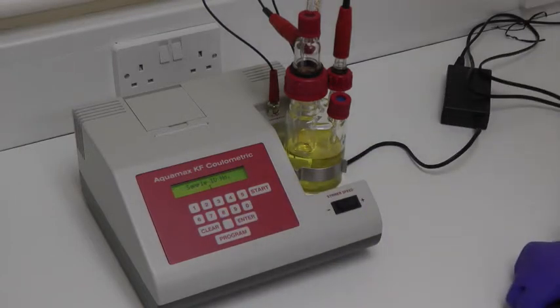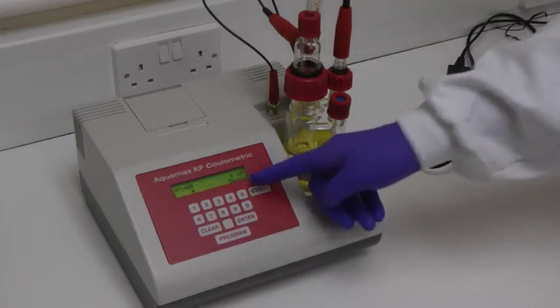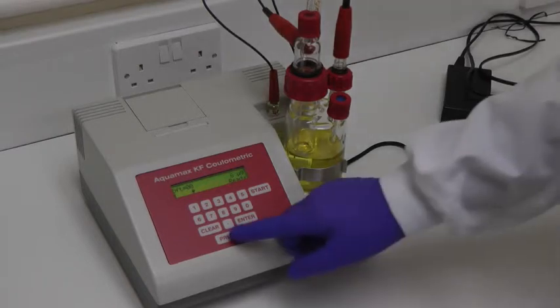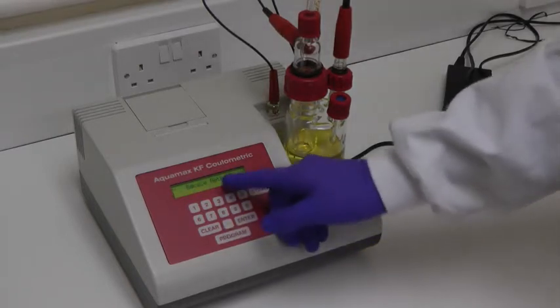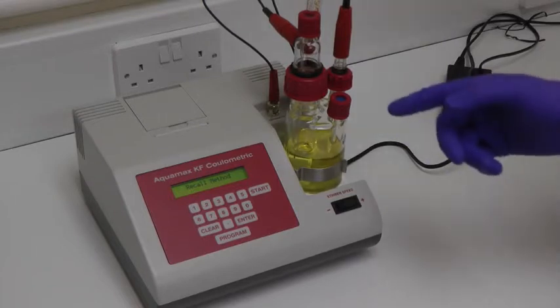If the sample ID number is the only parameter to be changed, press Clear, and the unit will return to the ready mode. It is not necessary to scroll through unwanted parameters. The second parameter is Recall Method. Methods can be stored in memory to avoid reprogramming from scratch.